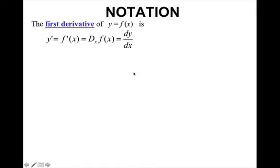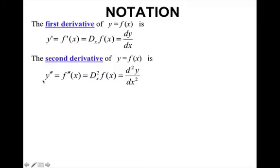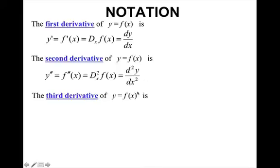Now we can find the second derivative — taking the derivative of the derivative — the third derivative — taking the derivative of the derivative of the derivative — and so on. The second derivative is written as either y double prime, f double prime, the second derivative of f of x with respect to x, or the second derivative of y with respect to x. The third derivative is written as y triple prime, f triple prime, etc.